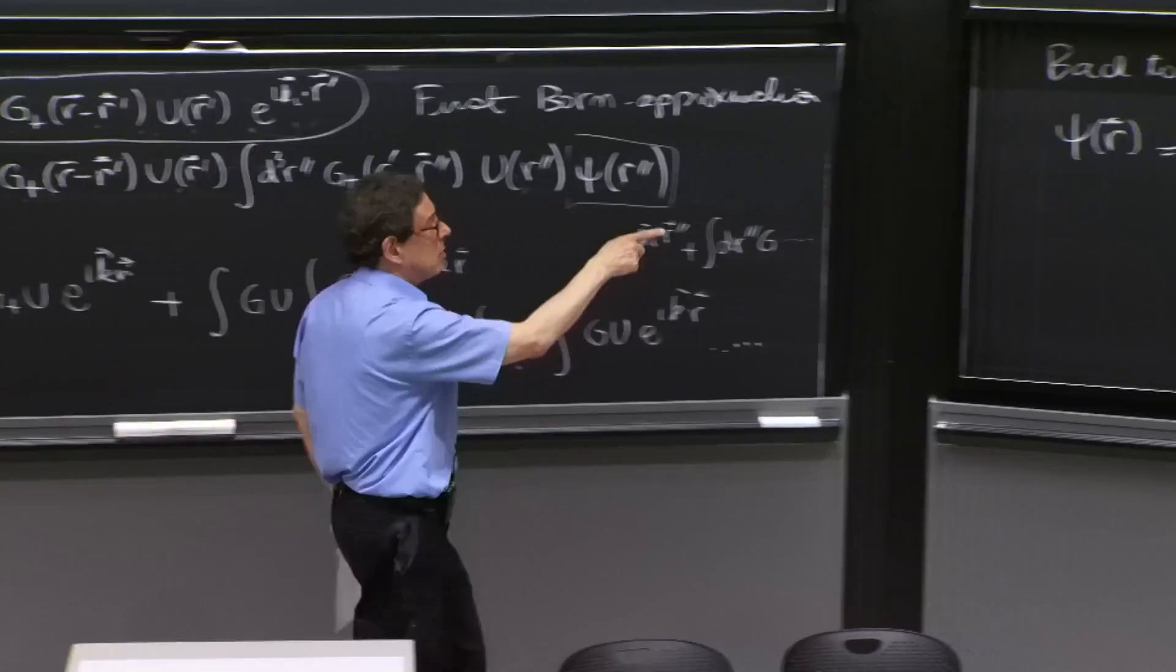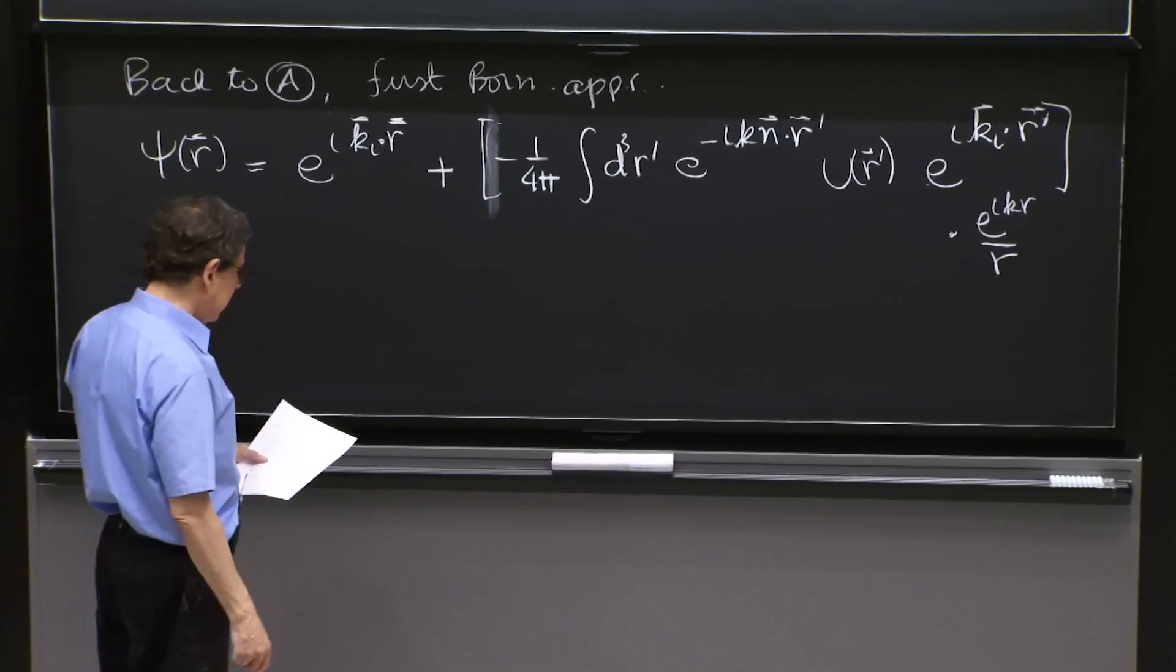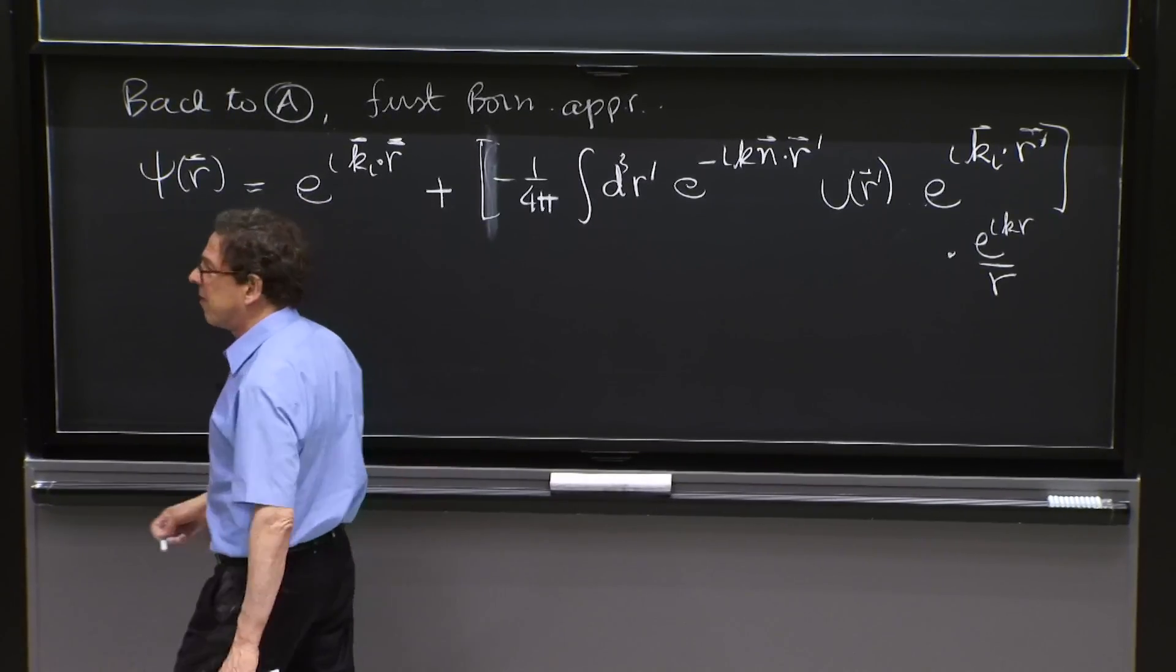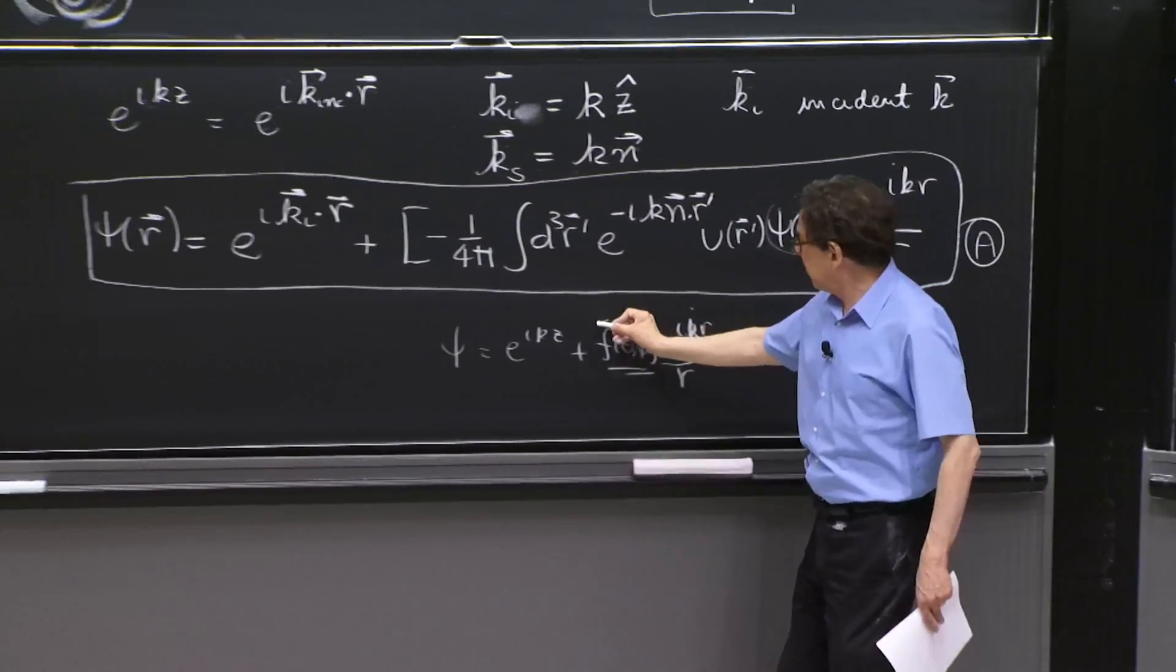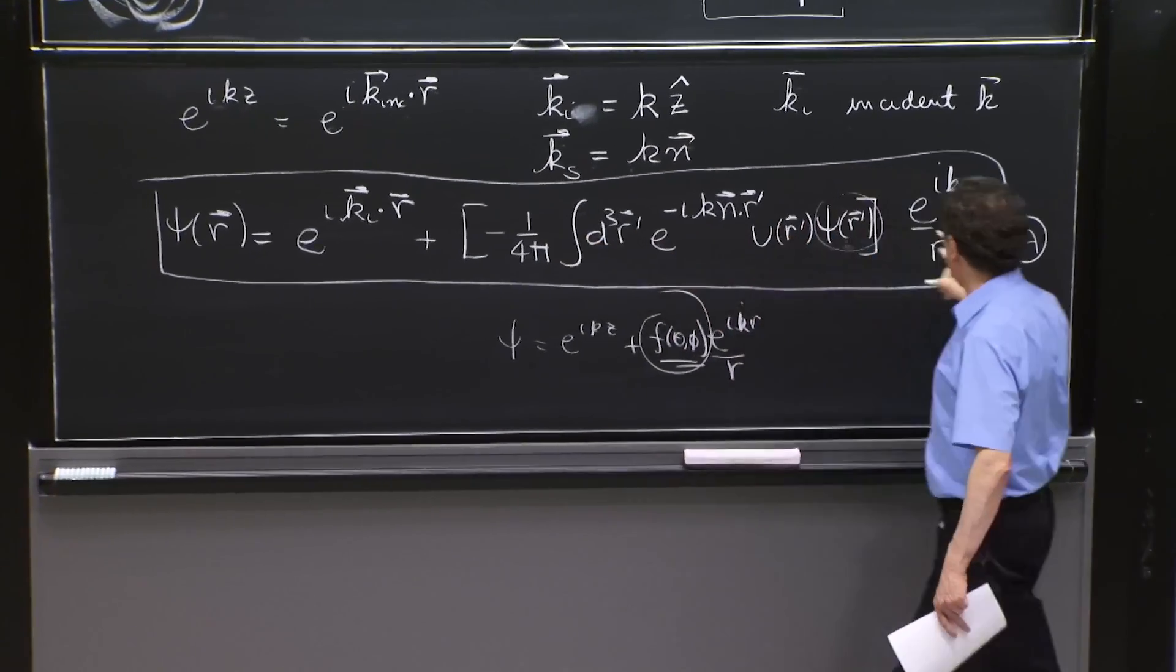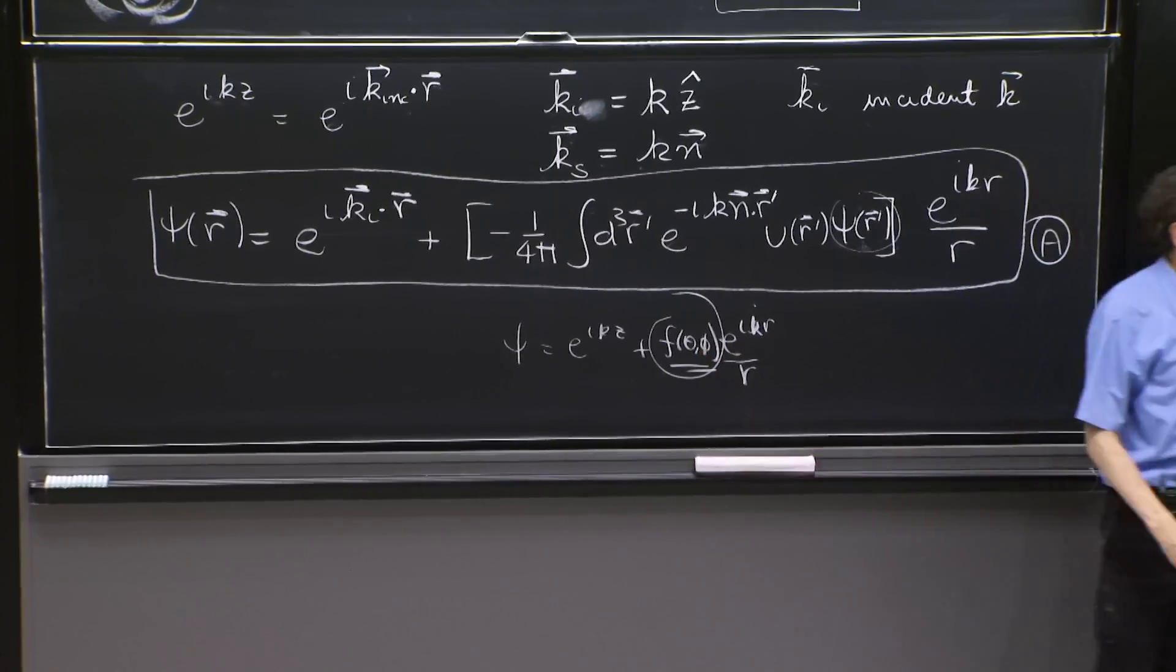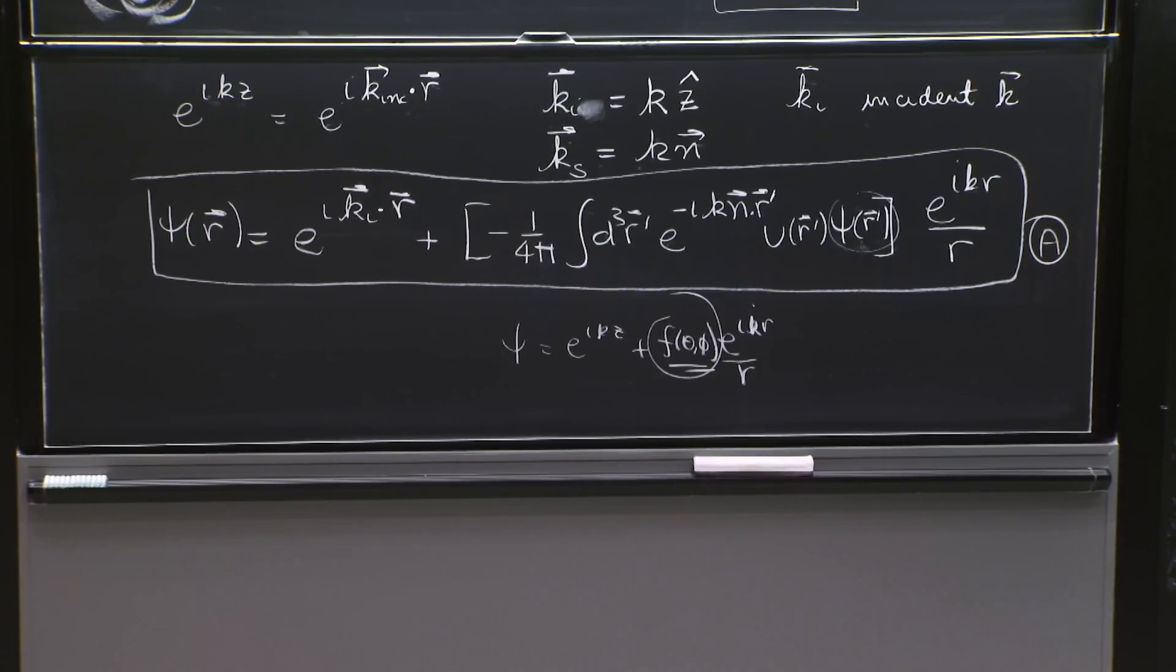But now this is really good. We can compare this with what we usually call f theta of phi. The expression over brackets is the scattering amplitude f theta phi.